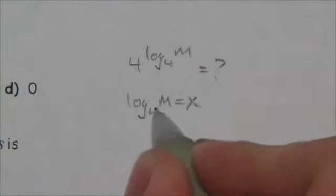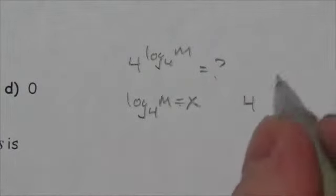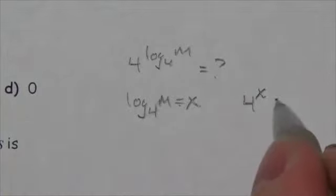So, the base is 4 of the logarithm, so the base of the exponential will be 4. A logarithm is an exponent, so that's 4 to the x, and it's going to equal what's inside.